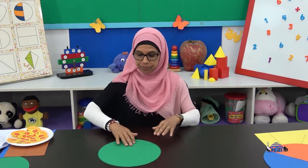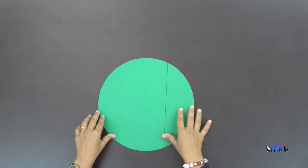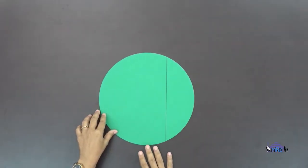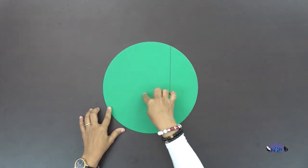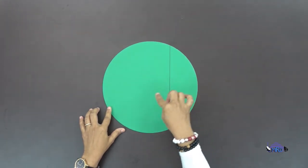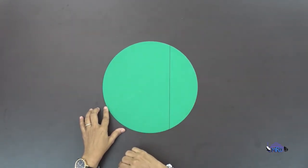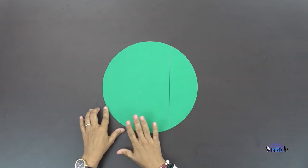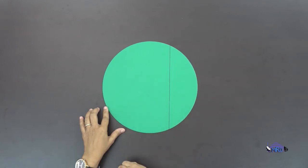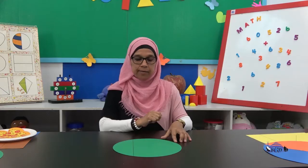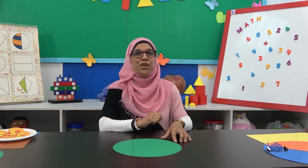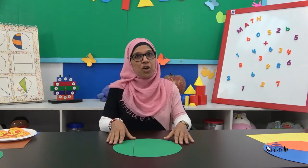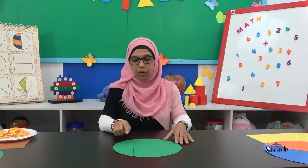Let's look at another shape. It's a circle, just like the other one. It's separated into two pieces. Is each piece equal or unequal? You decide — what do you think? You're right, great job. It's unequal.